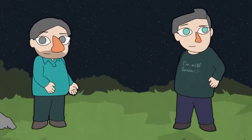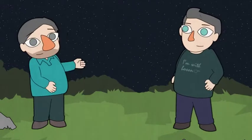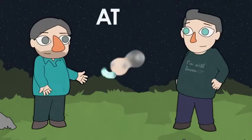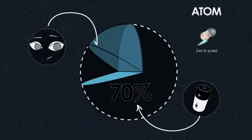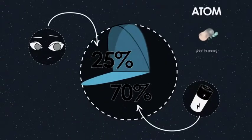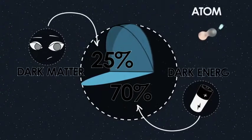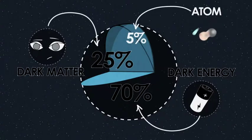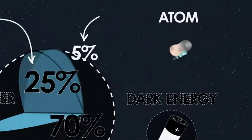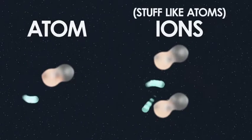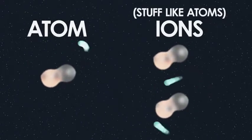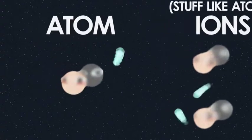I was wondering what everything's made of. First of all, isn't everything made of atoms? All the stuff around us is made of atoms. There's the 95% of the universe we don't really understand — dark matter and dark energy — but putting that aside, yeah, the 5% of the universe where we do seem to understand what it's made of is all made of atoms, or stuff like atoms: ions, which are atoms with missing or extra electrons.